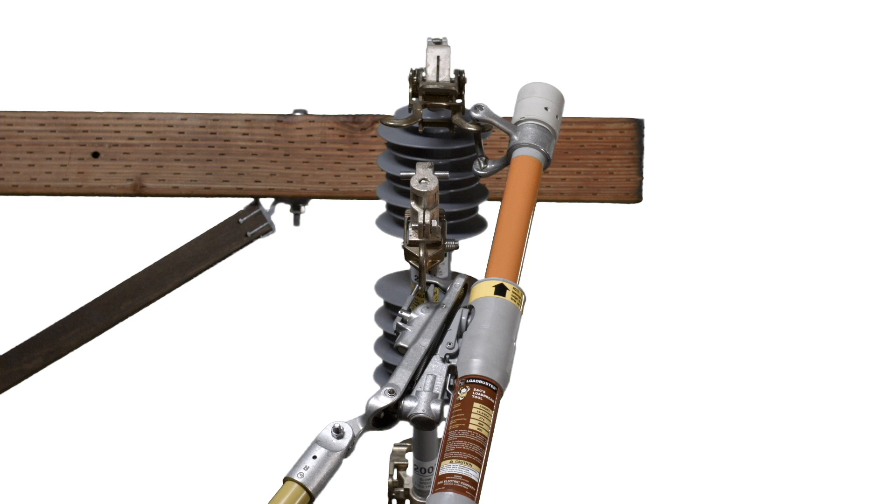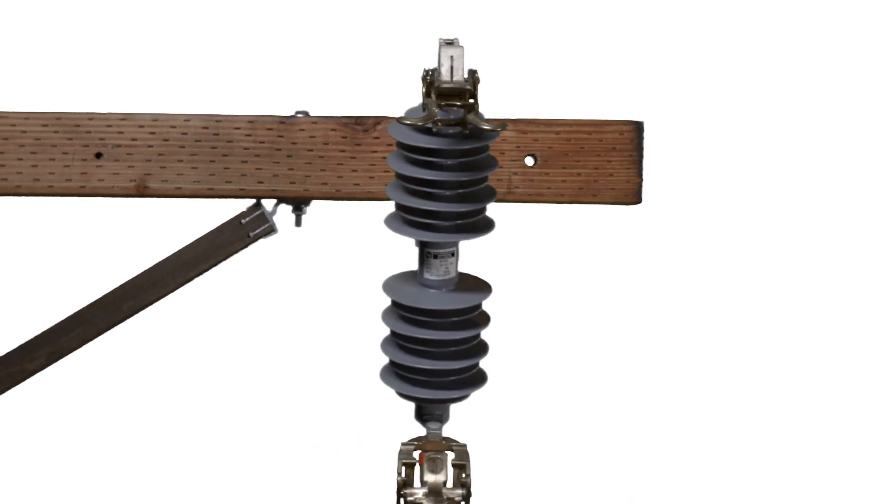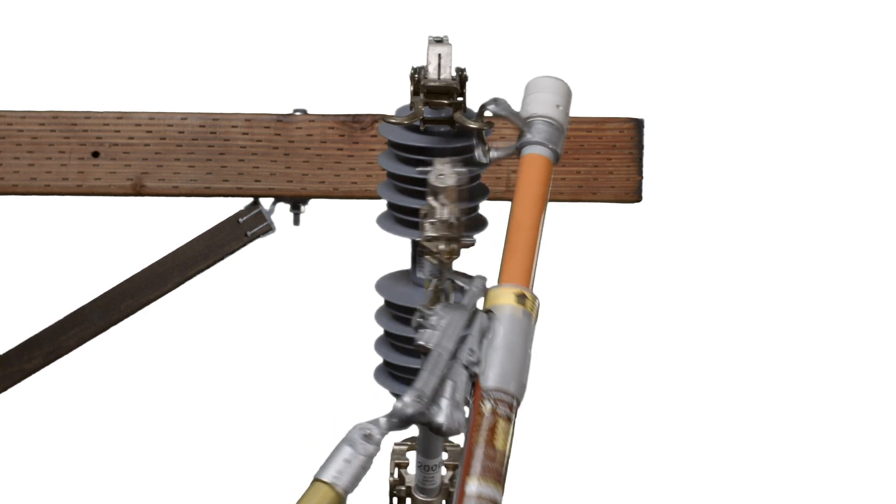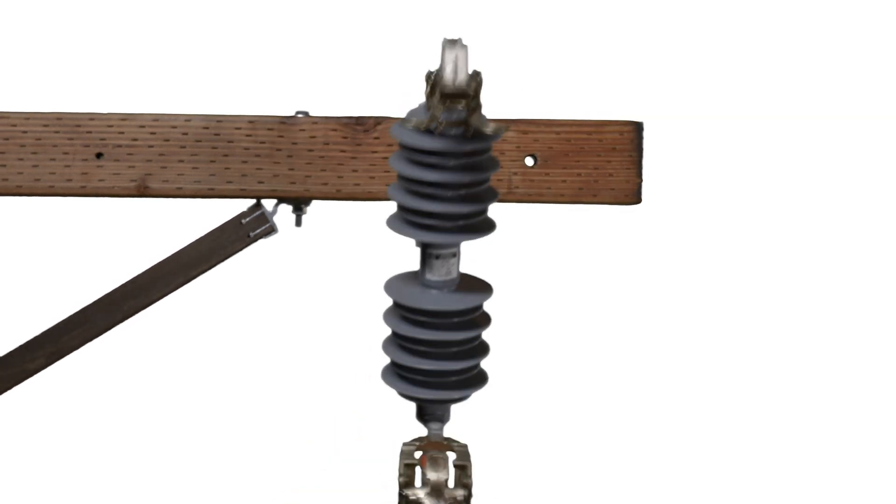Merely by twisting the pole after the Loadbuster tool has been tripped and fully extended. To perform this operation easily and smoothly, always roll the Loadbuster tool so it rotates in an upward direction.